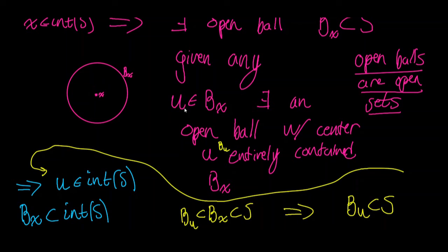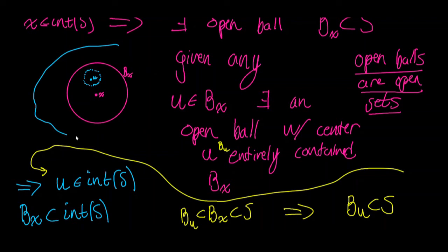To put a little emphasis on the proof: U is any point in the open ball B sub X. Since B sub X is an open set, there must exist an open ball with center U entirely contained in B sub X. And since B sub X is contained in S, that implies U is a point in S such that there exists an open ball with center U entirely contained in S — meaning U is in the interior of S.